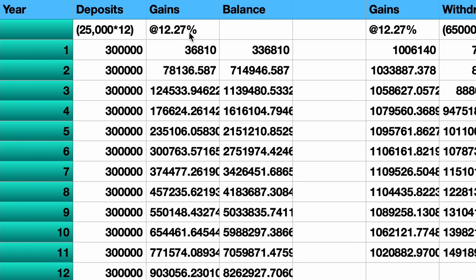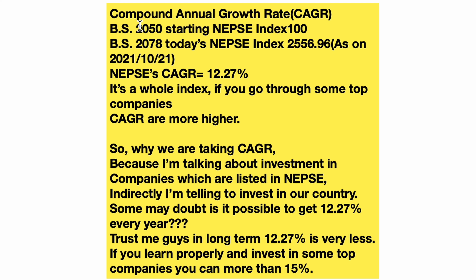So how do you get 12.27%? I will tell you the calculation. 12.27% is the compound annual growth rate (CAGR) of the Nifty 90% index. This is calculated from the year 2015, when the Nifty 90% index started, up to the last market closing index value.